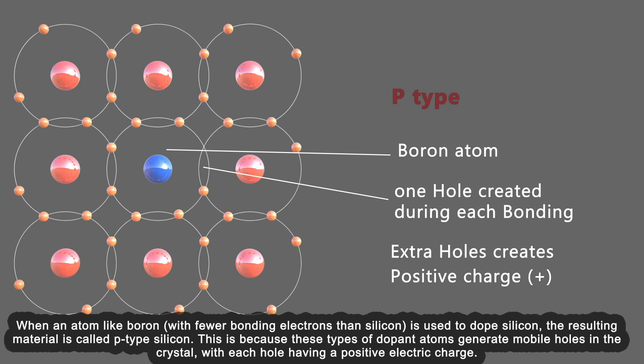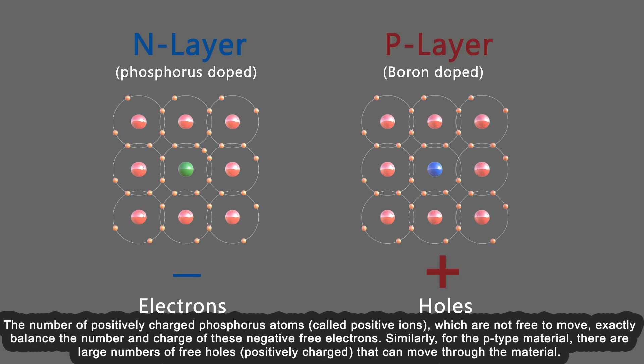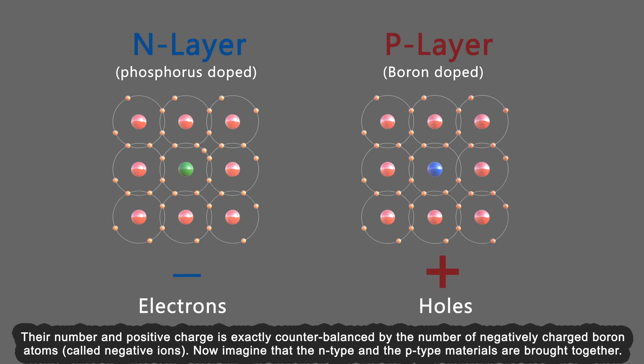Doping one side of silicon with boron (a p-type dopant) and the other side with phosphorus (an n-type dopant) forms a p-n junction. The n-type material has large numbers of free electrons (negatively charged) that can move through the material. The number of positively charged phosphorus ions exactly balances the negative free electrons. Similarly, for p-type material, there are large numbers of free holes (positively charged). Their positive charge is exactly counterbalanced by the negatively charged boron ions. Now imagine that the n-type and p-type materials are brought together.